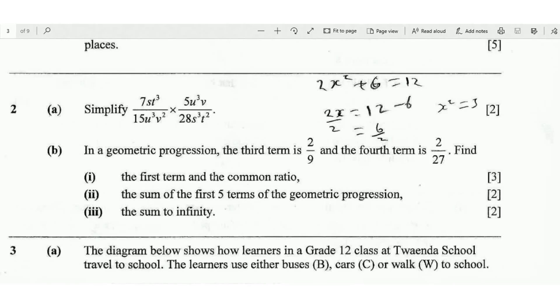Question B reads: in a geometric progression, the third term is 2 over 9 and the fourth term is 2 over 27. Find the first term and the common ratio, 3 marks.